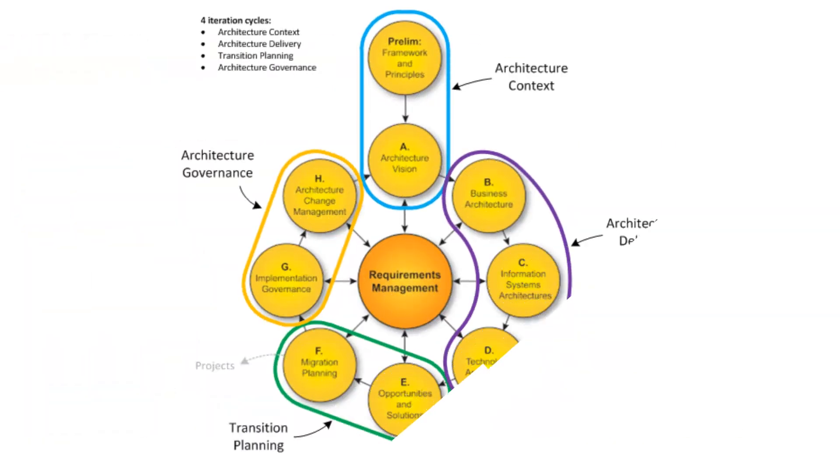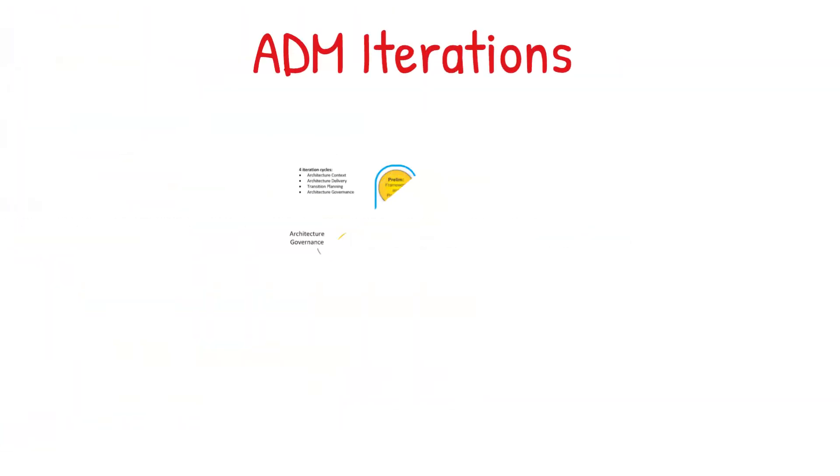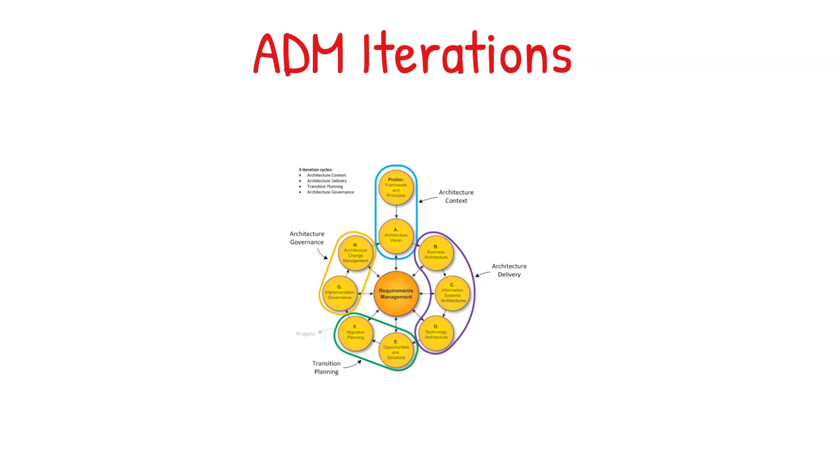The figure in front of us is a depiction of the ADM iterations. It's actually a complete set of ADM phases, grouped into four. The first of the four is the Architecture Context Iteration, which sets the background for implementation of architecture work.